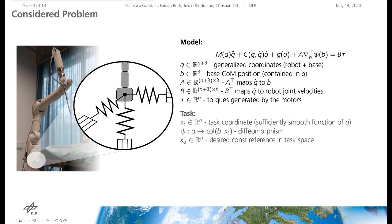The task is described by n coordinates which are sufficiently smooth in generalized coordinates. It is assumed that there exists a diffeomorphism mapping the generalized coordinates to the base and the task coordinates. The control objective is to stop the base vibration as well as to stabilize the constant reference in task space.